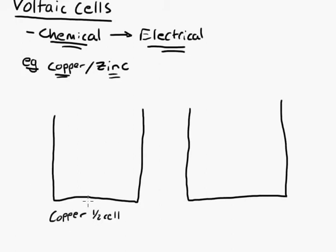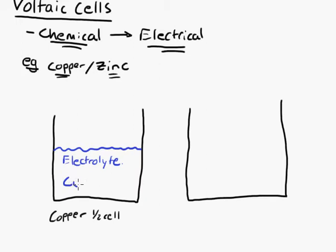A half cell consists of a few parts. The first part is the stuff inside, which is called the electrolyte. Depending on what your half cell is made of, you'll have a different electrolyte. Here we want copper, so it needs to be in the form of a solution — copper ions. We can use copper(II) sulfate, CuSO₄, which dissociates to give us Cu²⁺ ions and sulfate ions. The sulfate ions don't really participate in the reaction. The main thing we're concerned about is the Cu²⁺ ions — that's the electrolyte.